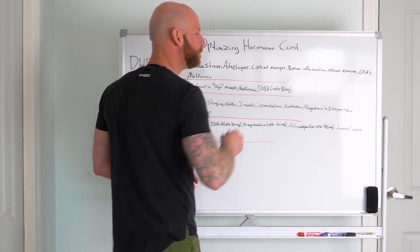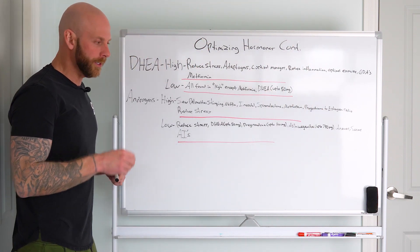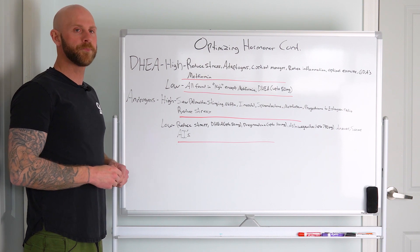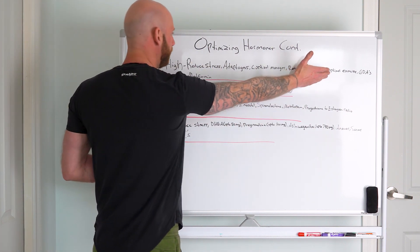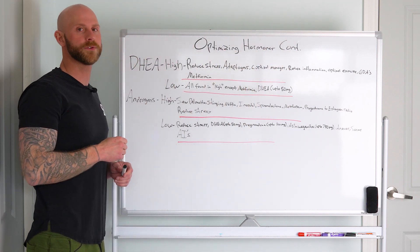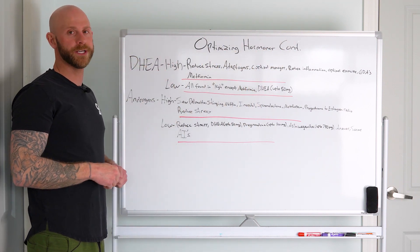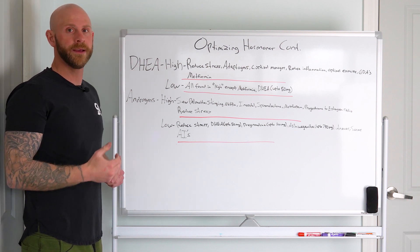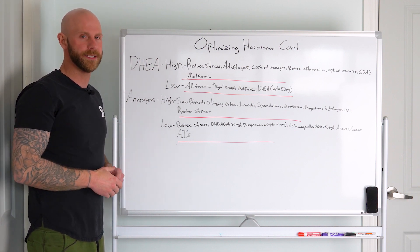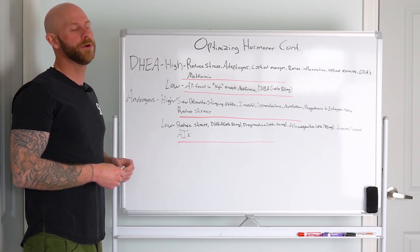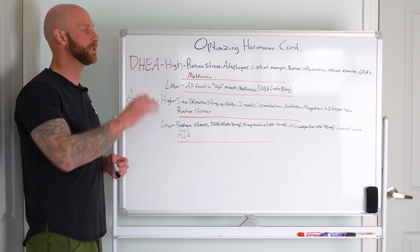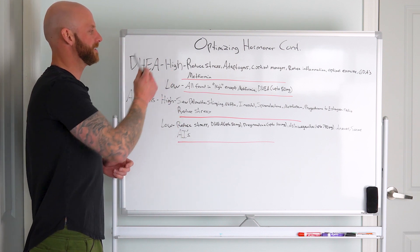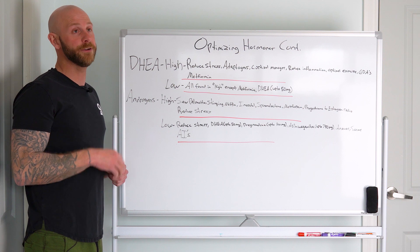GDAs - glucose disposal agents. A lot of us are struggling with higher levels of insulin which is bringing on more inflammation and higher levels of cortisol. You can use glucose disposal agents like berberine, bitter melon, cinnamon, alpha lipoic acid. Those help reduce insulin levels which can have a systemic effect on, well, literally everything, but in the context of this they can help reduce DHEA.